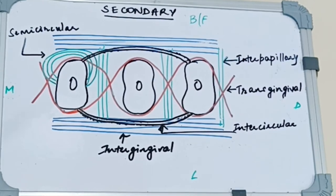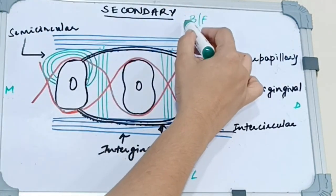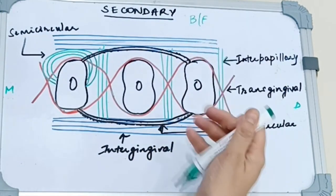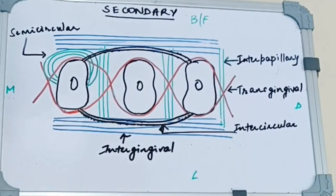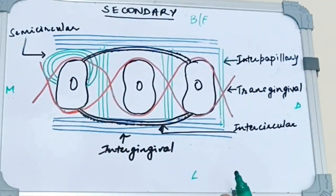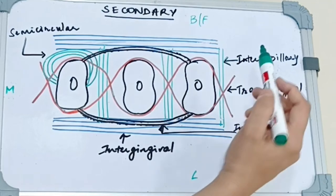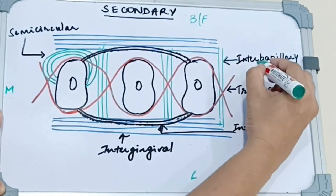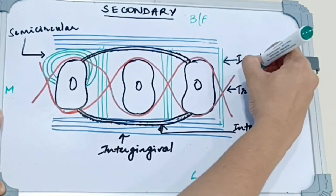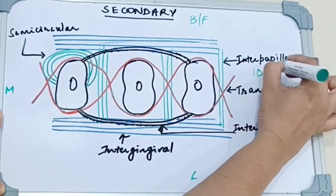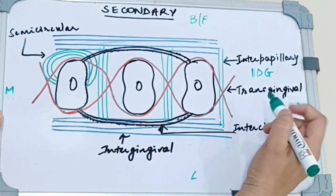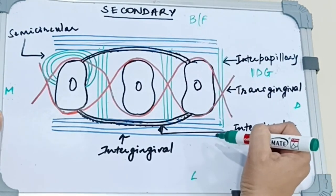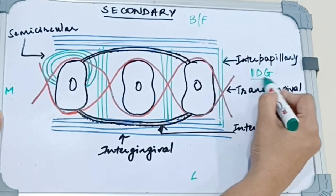For the sake of clarity let's divide this. Say this is the buccal or the facial surface, this is the lingual surface, mesial surface and the distal surface of the tooth. Now we have first the interpapillary fibers. These are the green ones, the interpapillary fibers. They are present in the interdental gingiva, so they extend facial-lingual and they provide support to the interdental gingiva.